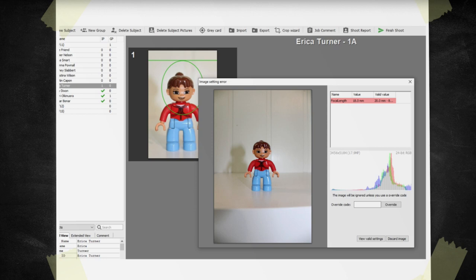Here we can see that the photographer, when tethered, receives a settings error message immediately and must either change the camera settings or call the office to get an override code. This ensures that the technical quality of the images are as specified by the company, not the photographer.